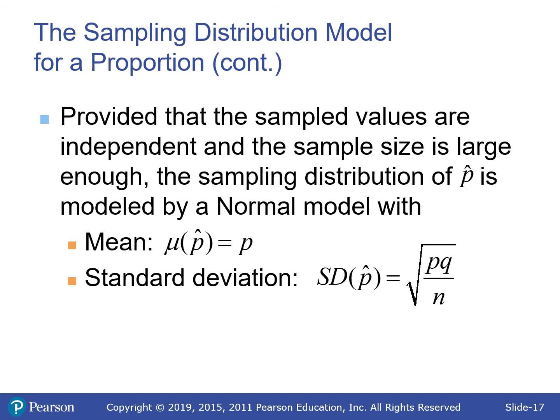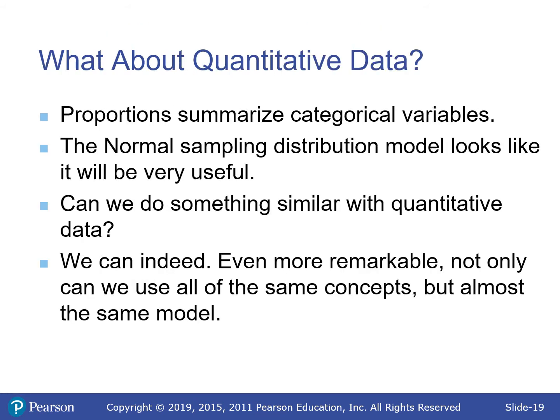Provided that samples are independent and sample size is large enough, the sampling distribution of p-hat (the sample proportion) is modeled by a normal model with mean p (the population proportion) and standard deviation √(pq/n), where q is 1 minus p. These are both on the AP formula sheet, though it uses 1 minus p rather than q.